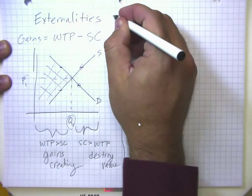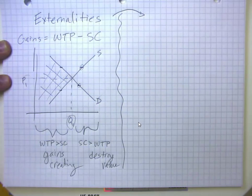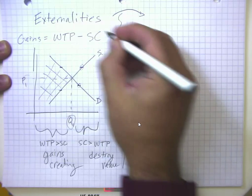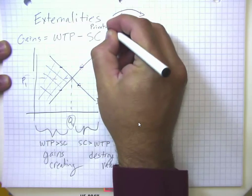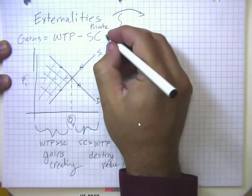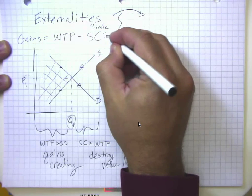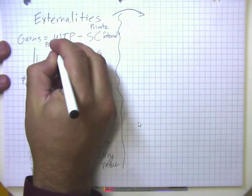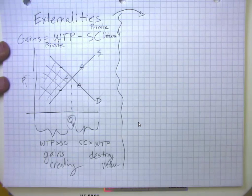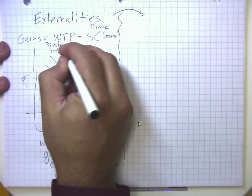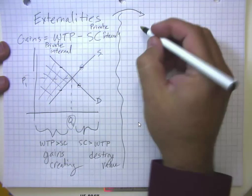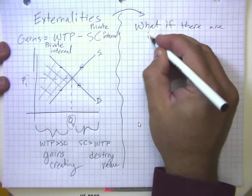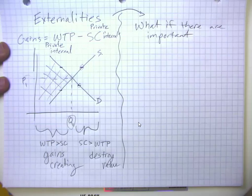But now we're going to look at a situation where there are going to be effects on third parties. So externalities talk about effects on third parties because the seller cost here is the private seller cost. It's the cost that the seller incurs, sometimes also called the internal seller cost. And the willingness to pay here reflected the benefits that the consumer got from the transaction. So the benefits were internal to the buyer. But what if there are important effects on third parties?